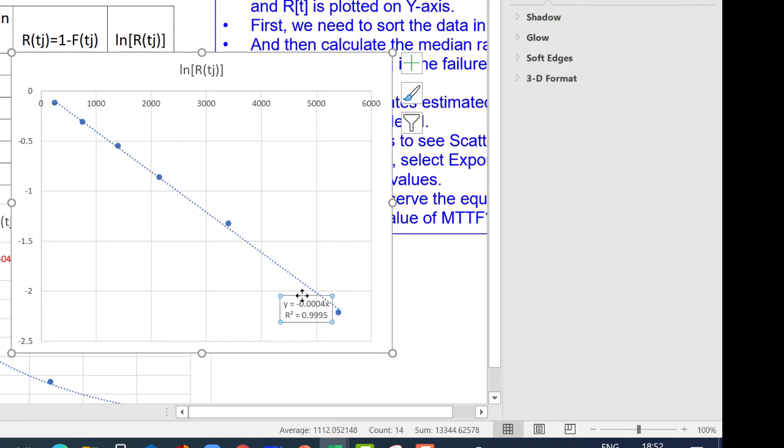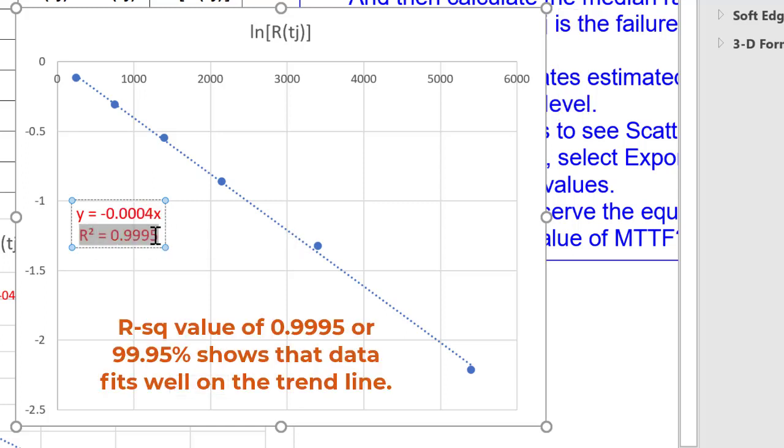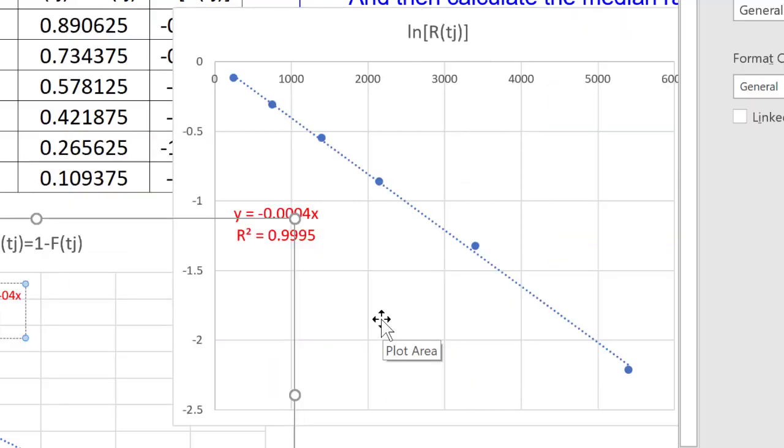And now, we look at this equation that it has given. I will just enlarge the size of the font so that it is readable. Now you see y is equal to minus 0.0004x. And R square value 0.9995 tells us the kind of fit, whether the data fits well. I can convert this into a percent value. So, I can say that 99.95% variation in ln of reliability is explained by time.